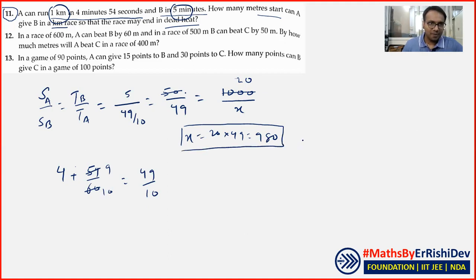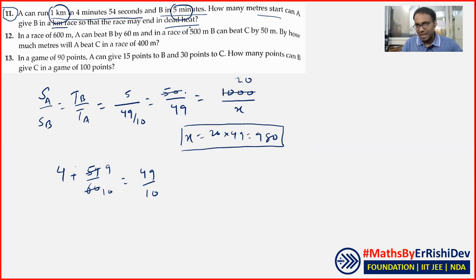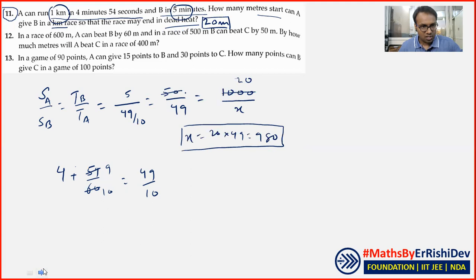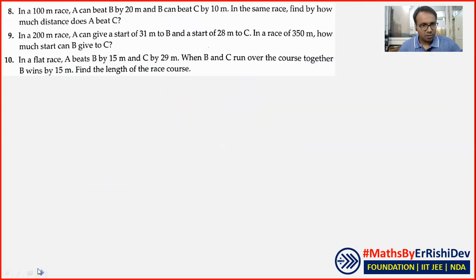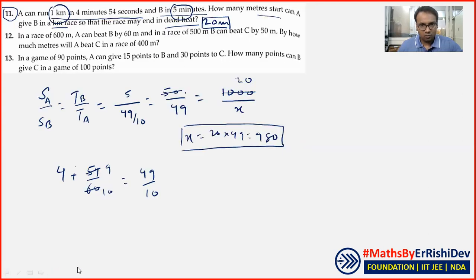A جتنے دیر میں 1 کلومیٹر بھاگے گا، B صرف 980 metres بھاگے گا۔ Dead heat کا مطلب ہے they should finish simultaneously at the same point — تو 20 metres کا start دے سکتا ہے۔ Question 11 کا answer 20 metres ہونا چاہیے — ٹھیک ہے۔